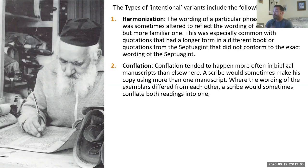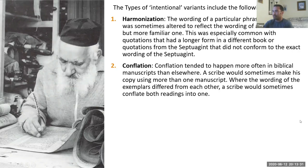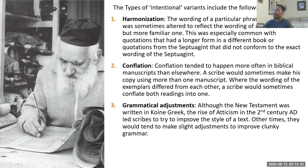Intentional variants include harmonization — altering the wording of a phrase to reflect more familiar wording from another passage, especially common with Old Testament quotations and the Septuagint. There's also conflation, where a scribe copying from more than one manuscript combines both readings into one — really a form of harmonization. And there are grammatical adjustments, since ancient Greek evolved over time.